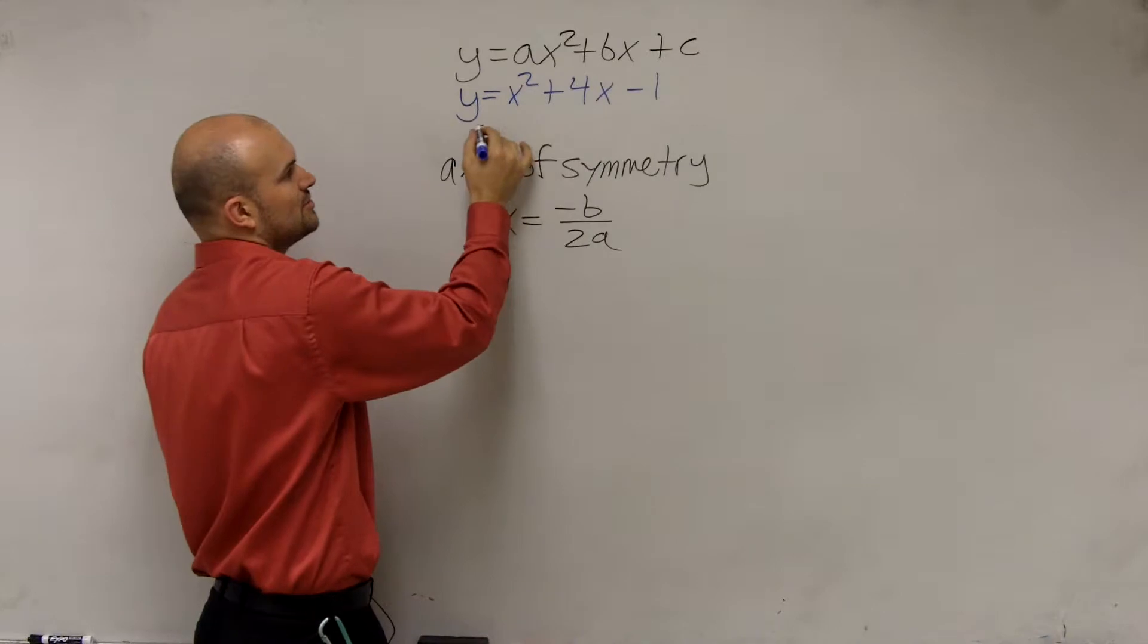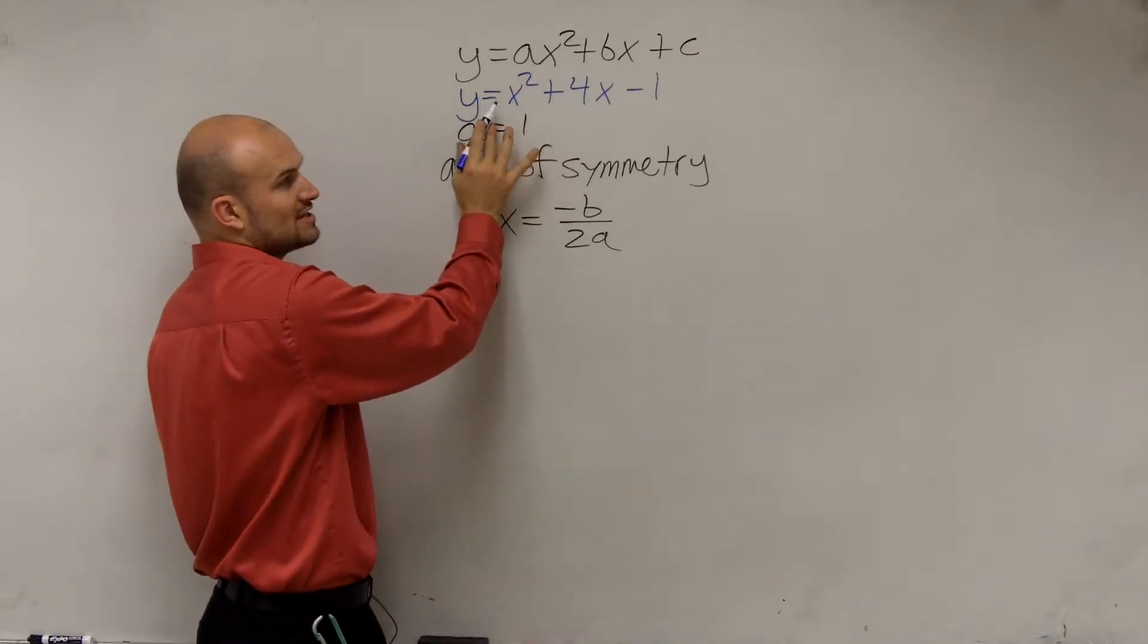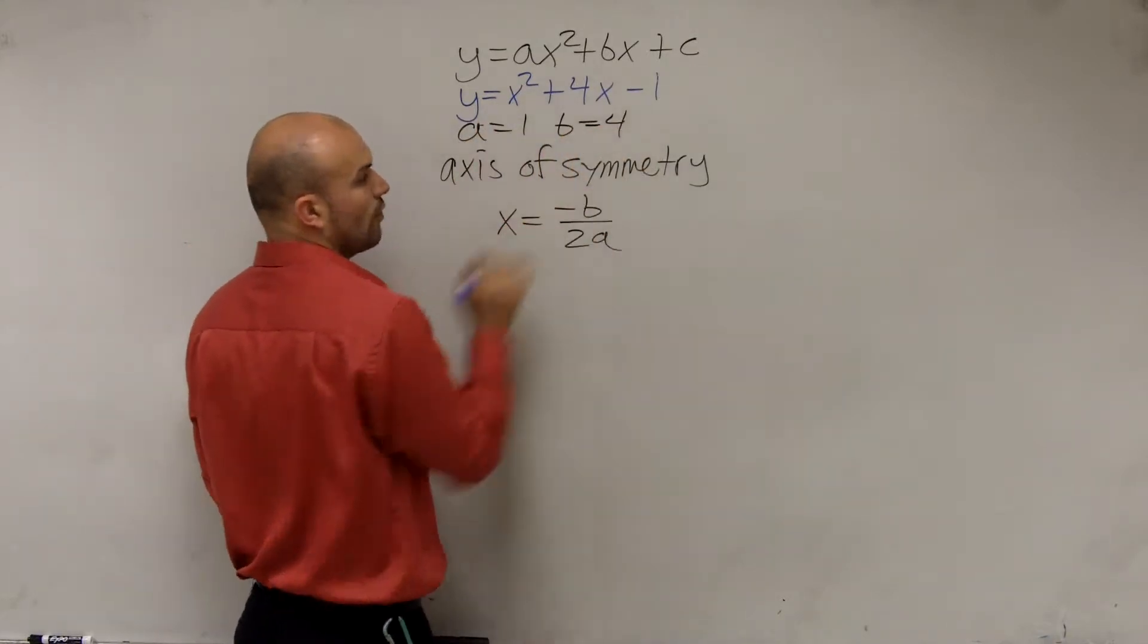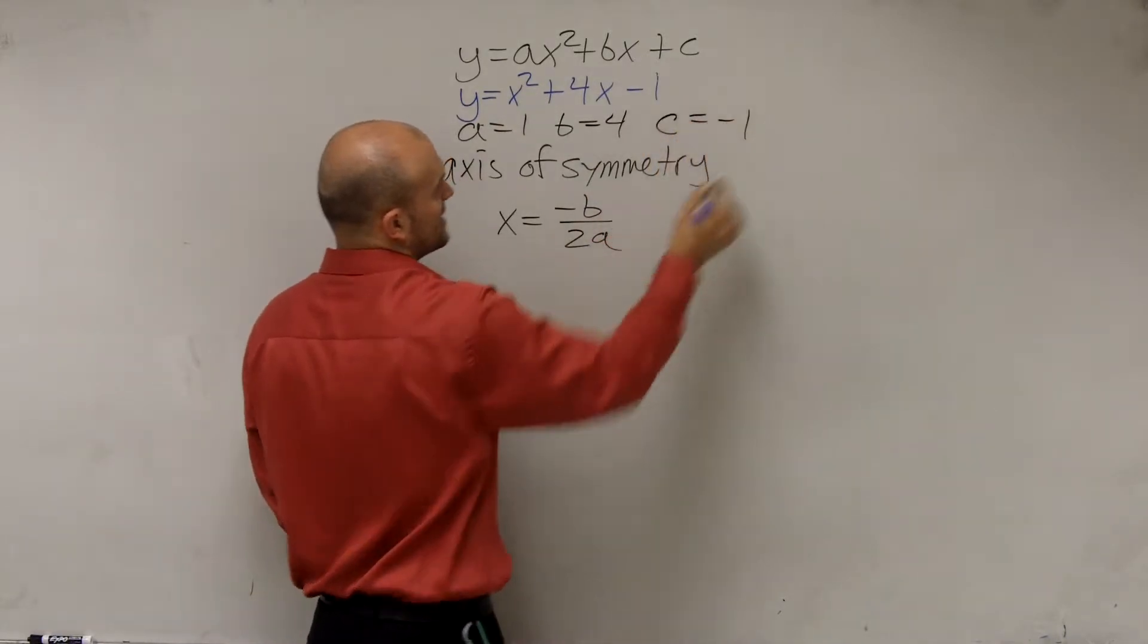y equals ax squared plus bx plus c. So therefore, in this problem, you could say a equals 1 because that's the coefficient of x squared, b equals 4 because that's the coefficient of x, and c equals negative 1.